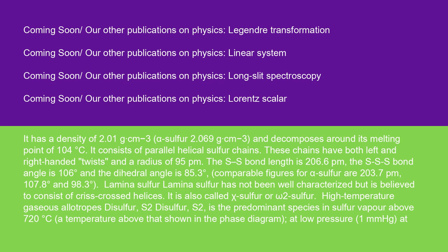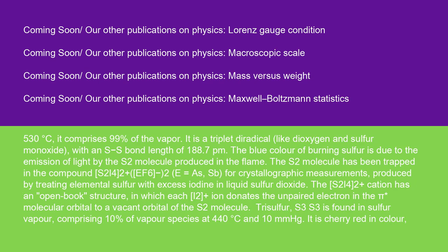Lamina-sulfur has not been well characterized, but is believed to consist of crisscross helices. It is also called chi-sulfur or omega-2 sulfur. High-temperature gaseous allotropes: disulfur (S2) is the predominant species in sulfur vapor above 720°C. At low pressure (1 mmHg) at 530°C, it comprises 99% of the vapor. It is a triplet diradical, like dioxygen and sulfur monoxide, with an S-S bond length of 188.7 pm.